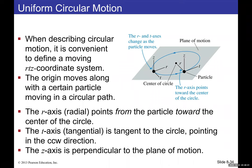For uniform circular motion, centripetal acceleration equals v² / r. We now add dynamics. It is convenient to define a moving r-t-z coordinate system: the r (radial) axis points from the particle toward the center, the t (tangential) axis is tangent to the circle in the counterclockwise direction, and the z axis is perpendicular to the plane.